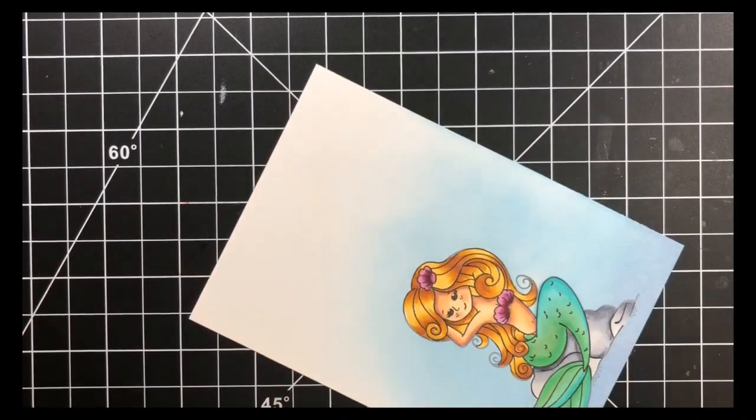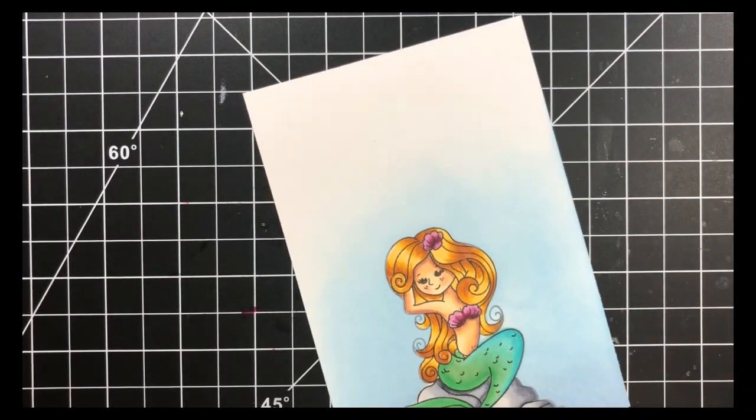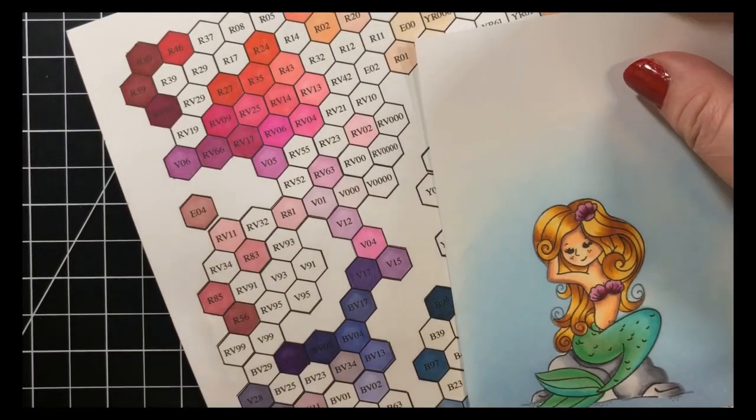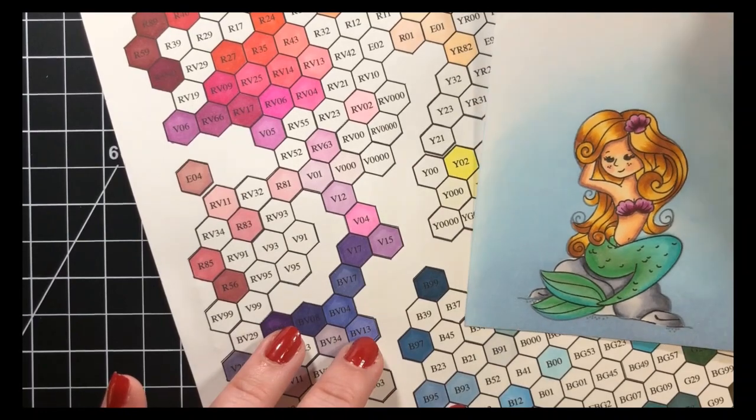Now for that little part of the rock down right below her fin it was a little bit too light for me so I did go back with my C3 marker and just add a little bit more later.